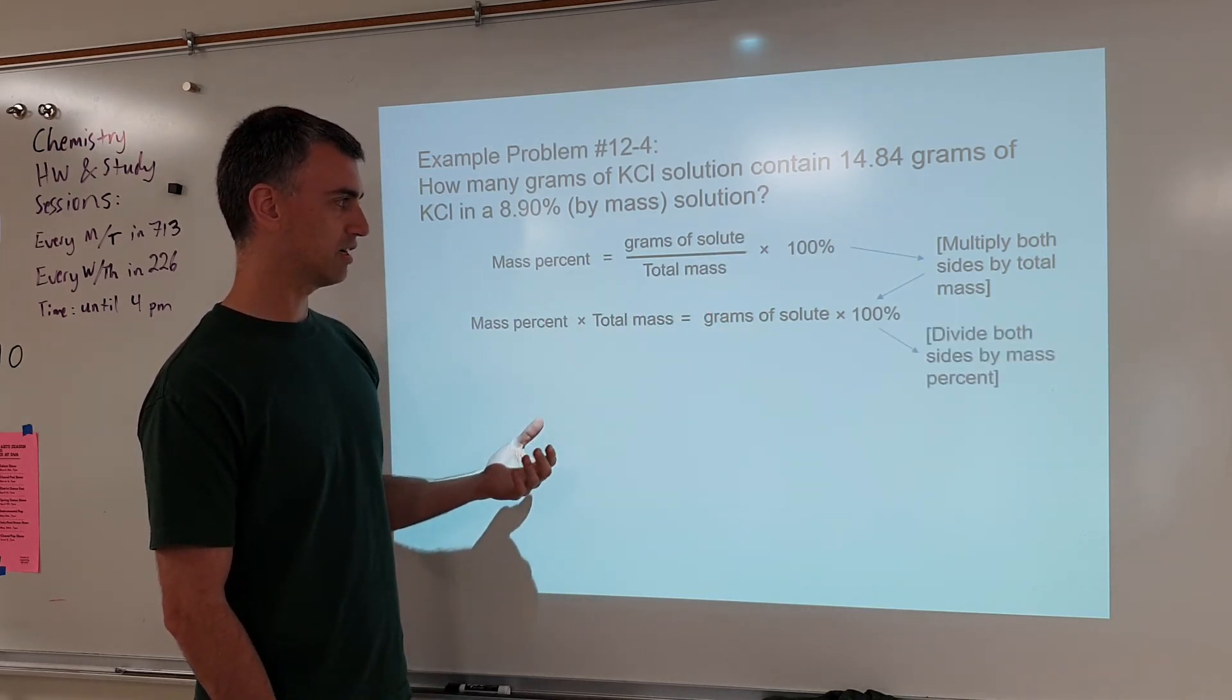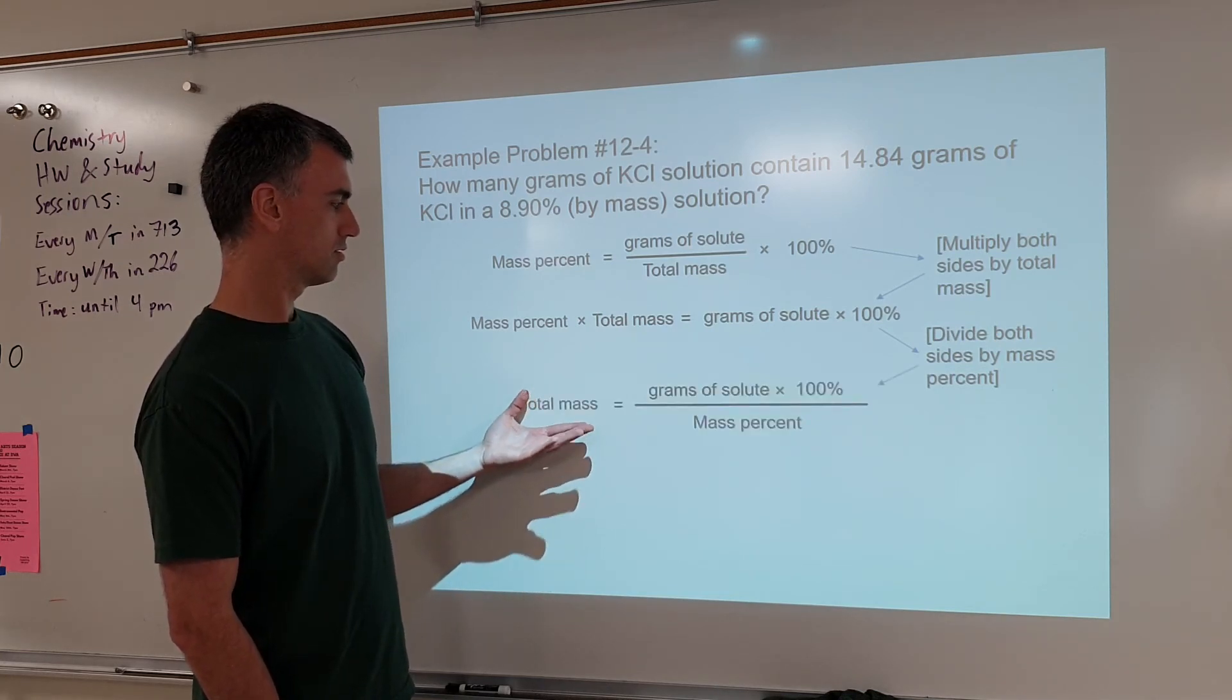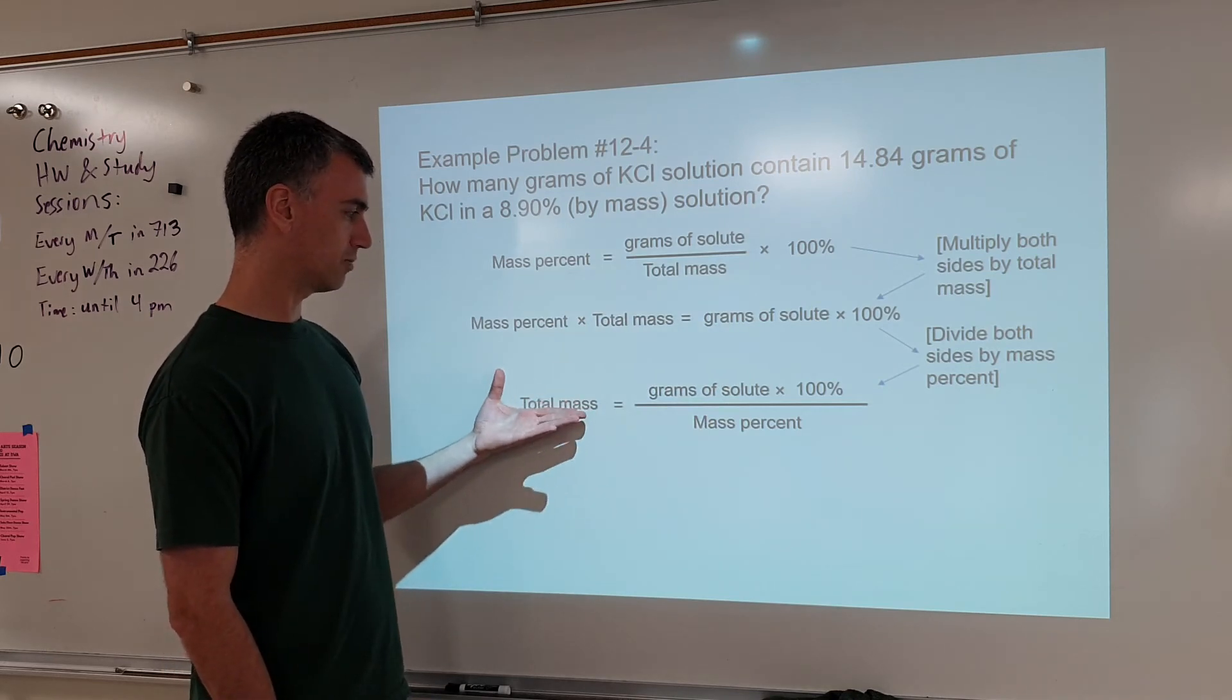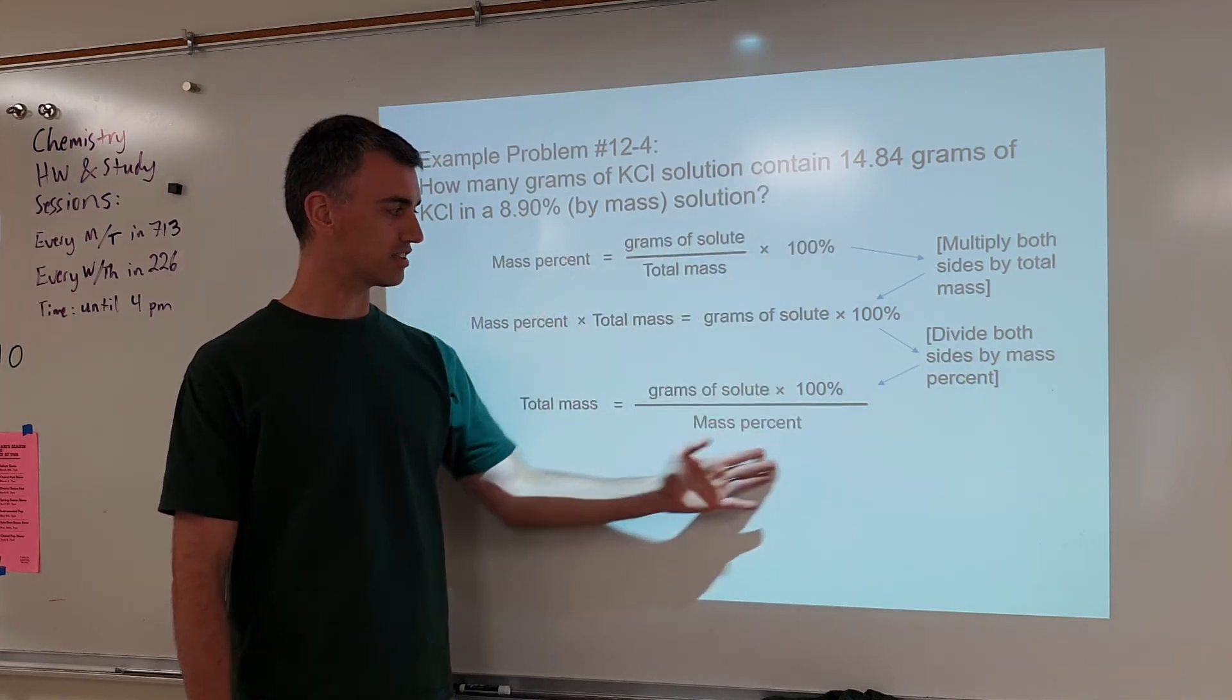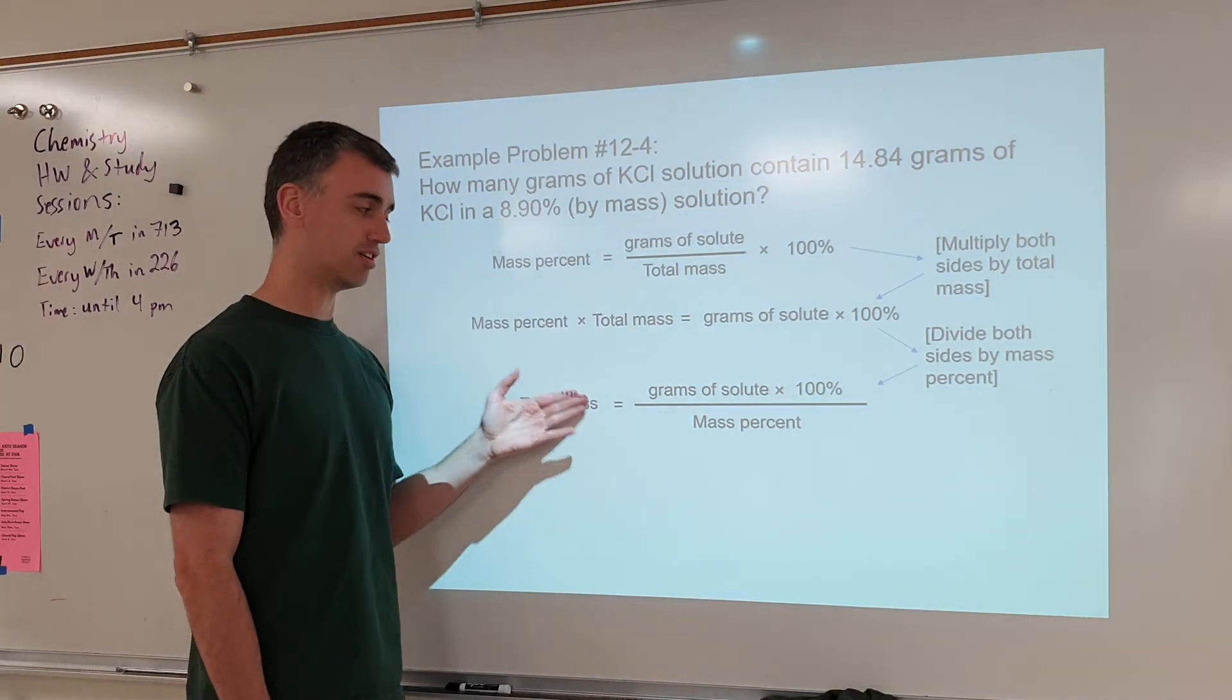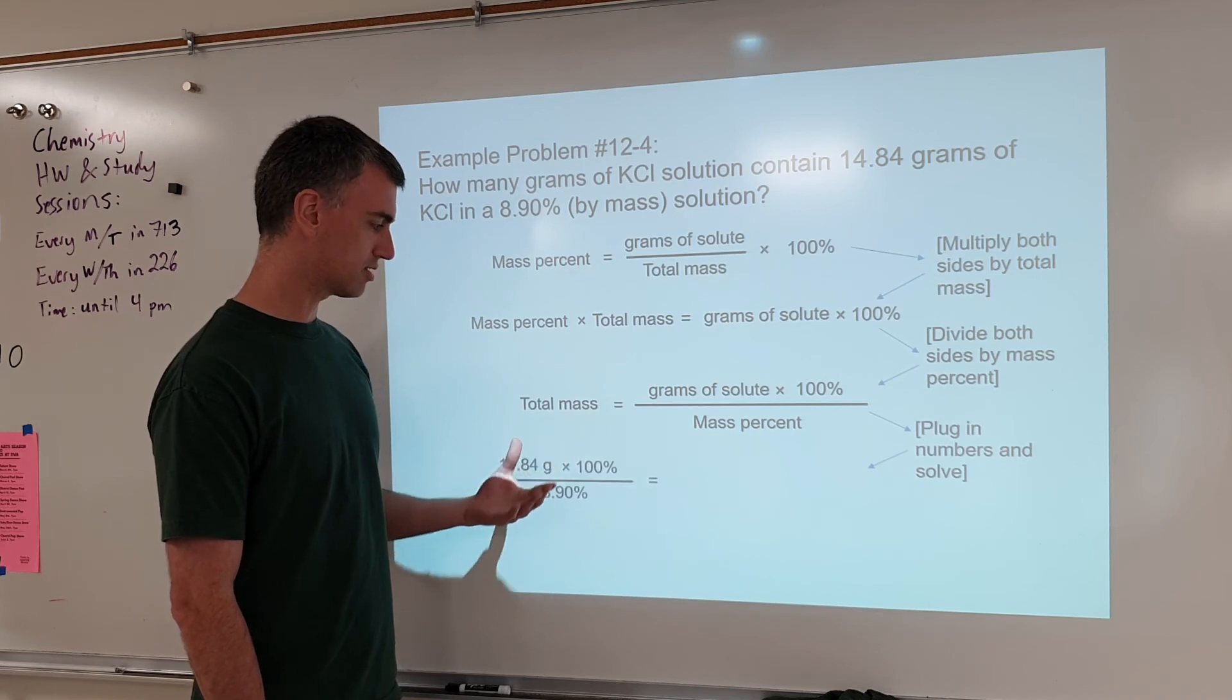Then we can divide both sides by the mass percent. So divide both sides by mass percent. Now we have total mass all by itself. Grams of solute, remember, grams of solute is right there. Mass percent is right there. So we're gathering all the stuff we have on one side and keeping the one thing we don't have on the other side so we can solve for it. Now that we've done that, you simply plug in the numbers and solve. So there's the numbers plugged in.